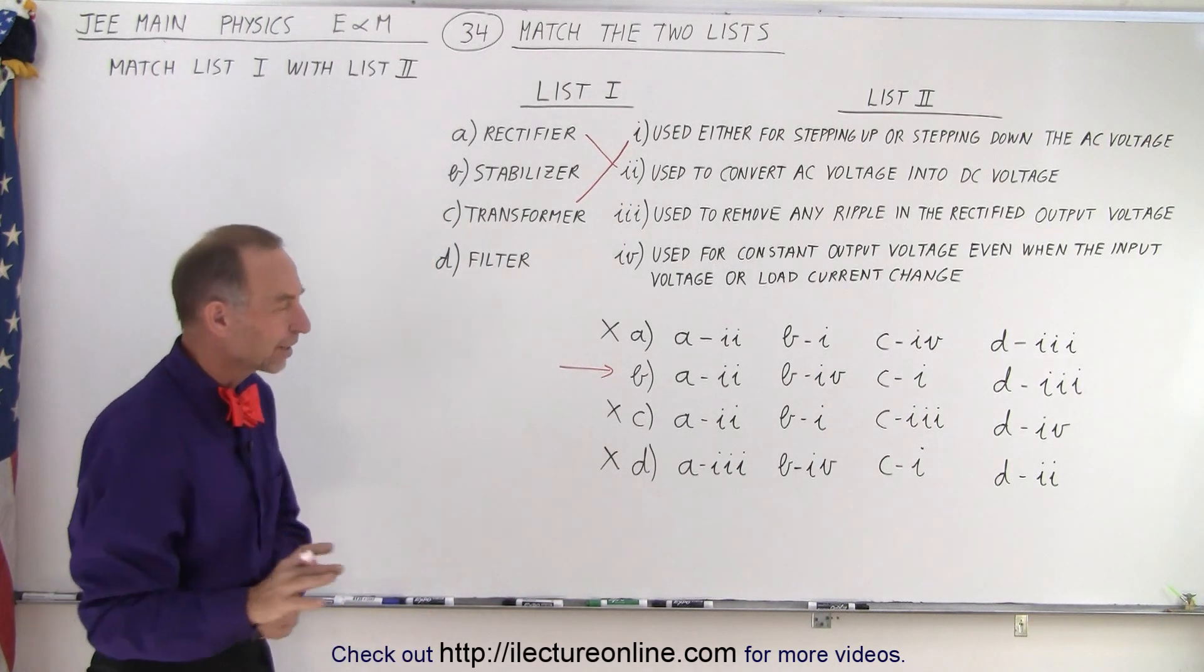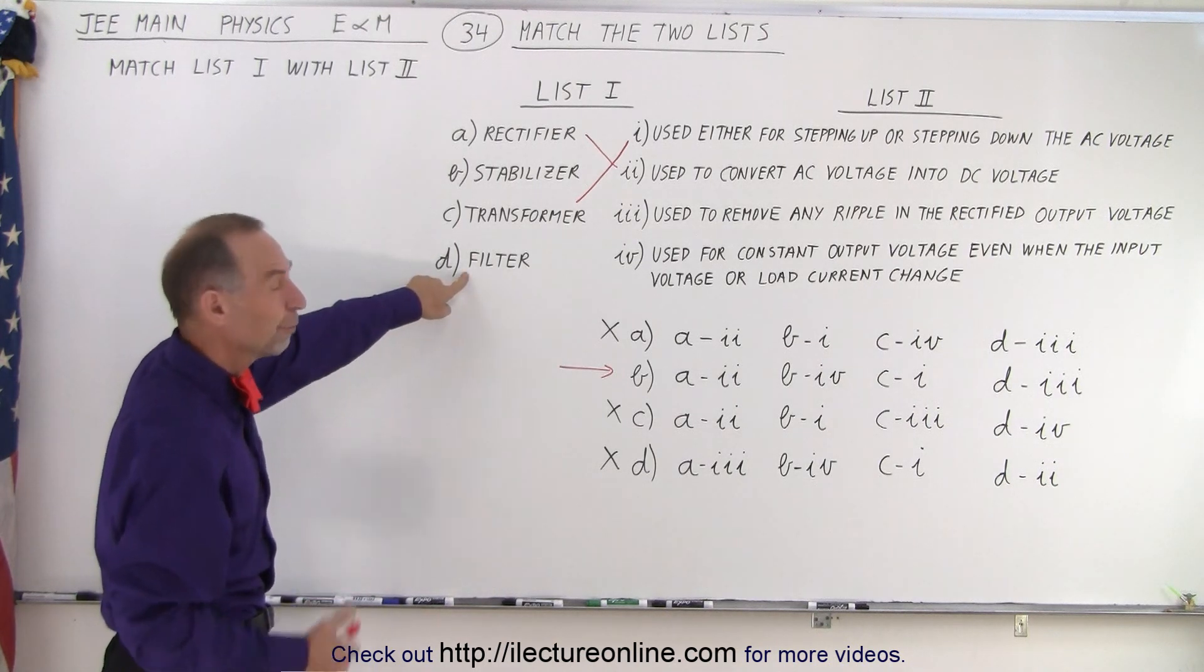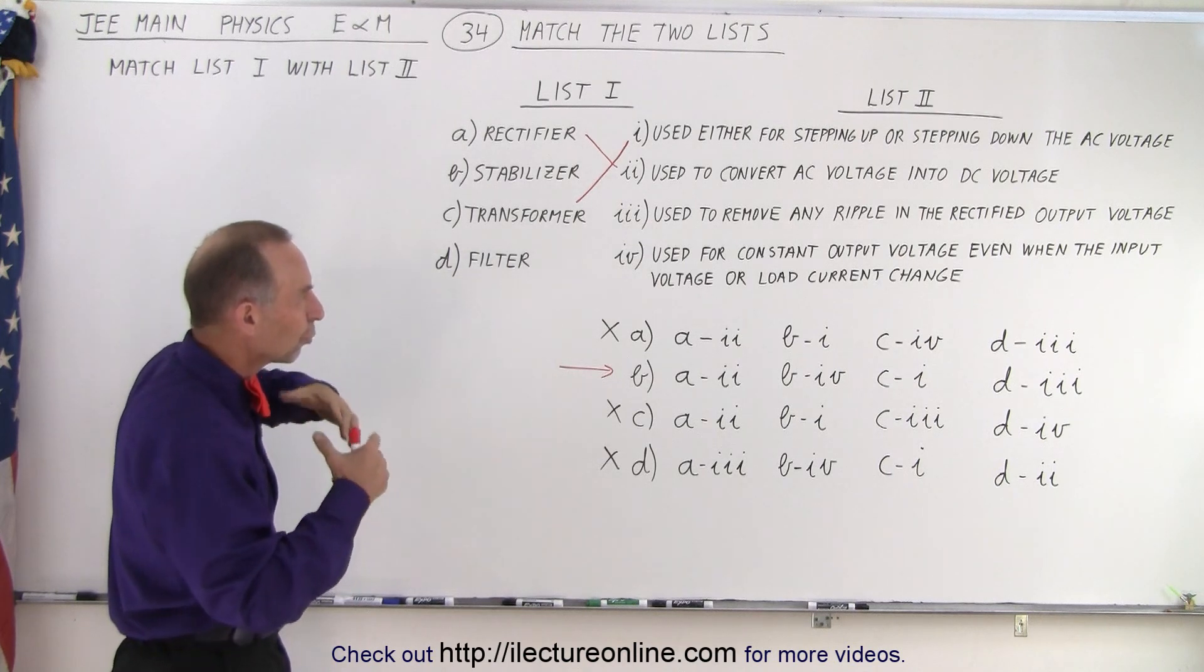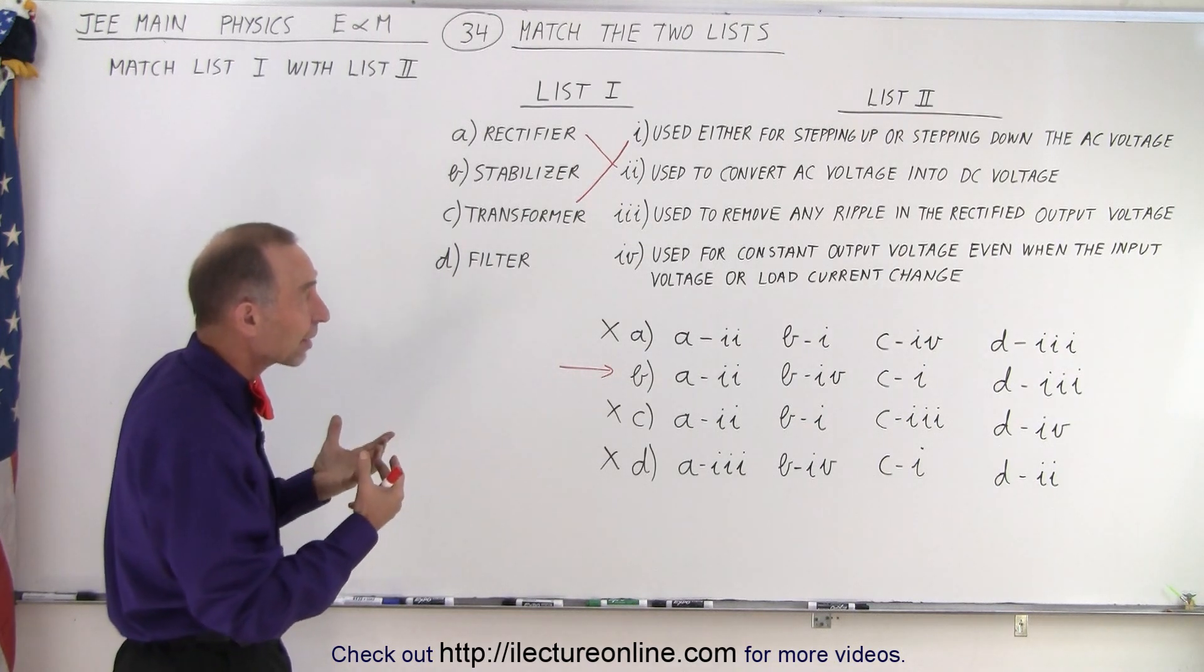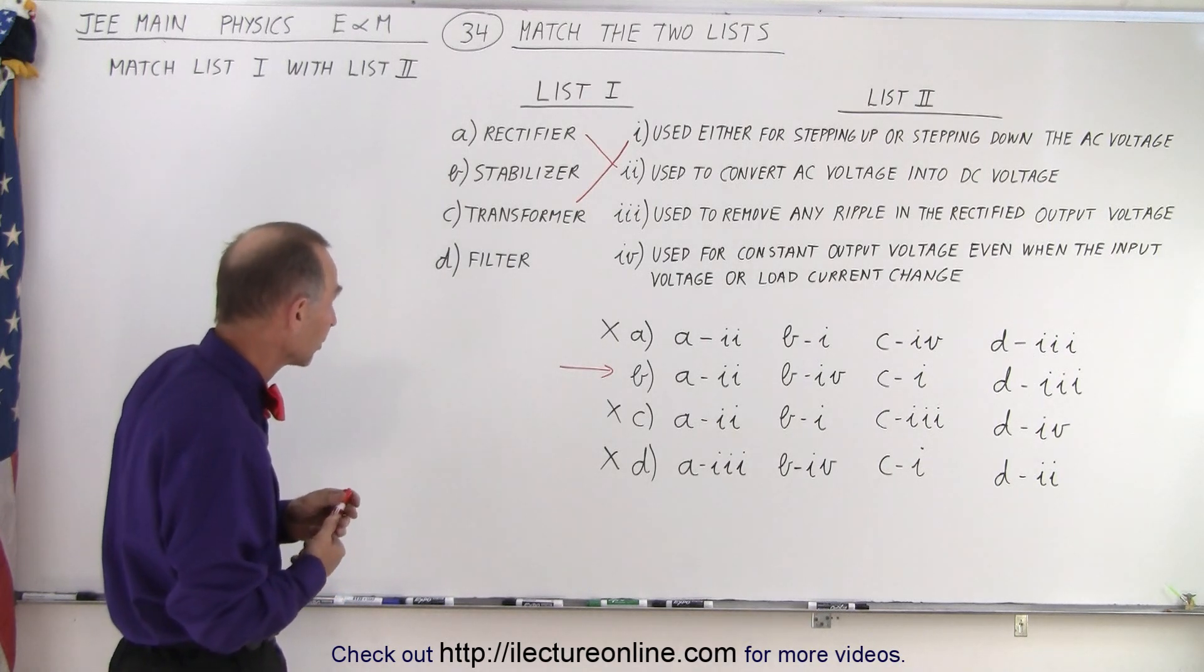But just to be on the safe side, let's go ahead and do the other two. How about filter? A filter is used to eliminate ripples. Not just ripples that come from a rectifier, but ripples from any source. And we typically use capacitors for that in the circuit.